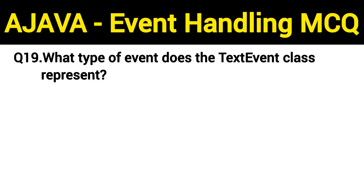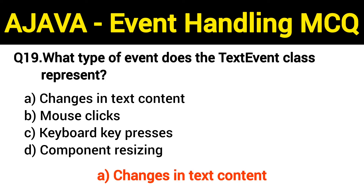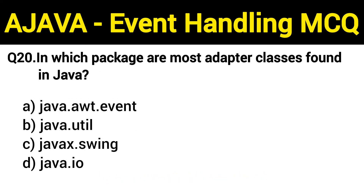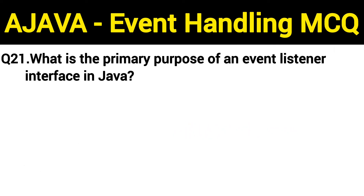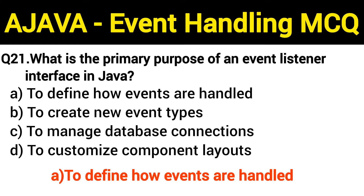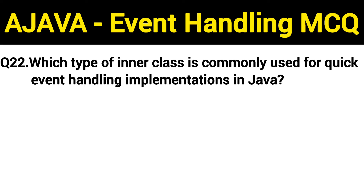Question number 19: what type of event does the TextEvent class represent? The right answer is option A: changes in text content. Question number 20: in which package are most adapter classes found in Java? The right answer is option A: java.awt.event. Question number 21: what is the primary purpose of an event listener interface in Java? The right answer is option A: to define how events are handled.